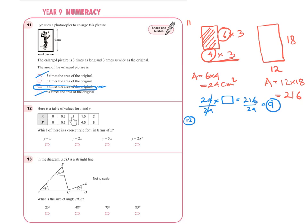Question 12: here's a table of values for x and y. Which is the correct rule for y in terms of x? Every time x changes, y changes as well, and we need to find the relationship. We can see when x equals zero, y equals zero, and when x equals 0.5, y equals 0.5 — that looks the same. But checking the last value: x equals two, y equals eight.